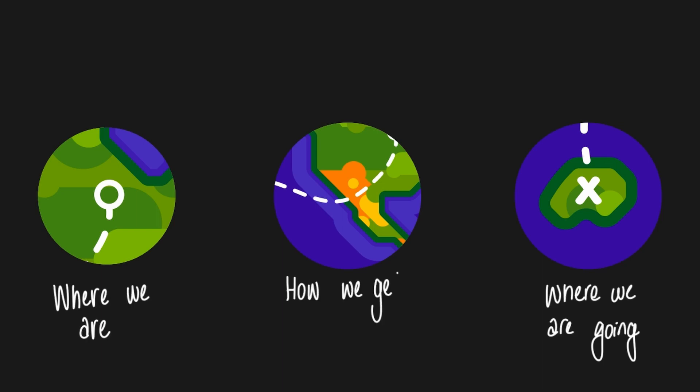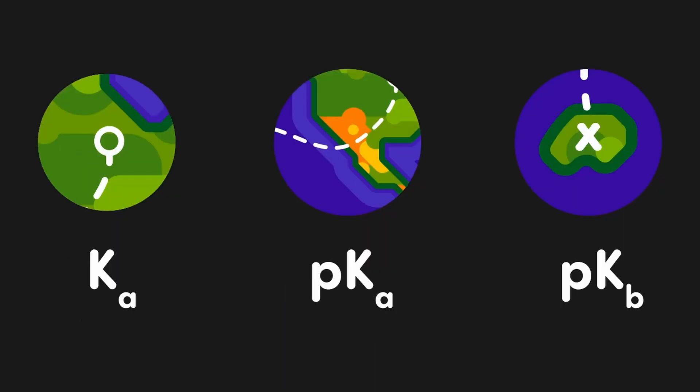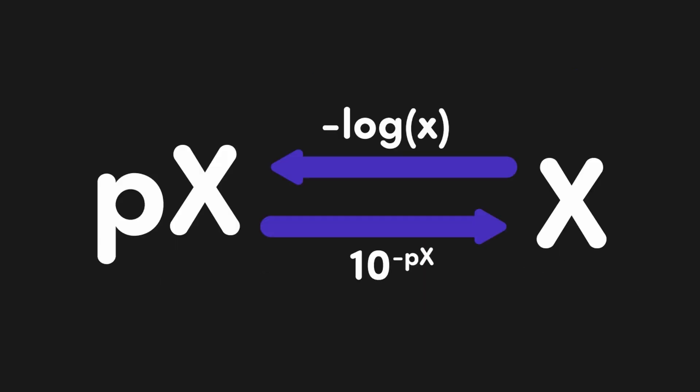For example, if we started with a Ka value and needed to get to a pKb, we could do so by converting from Ka to pKa, then to pKb. And as long as we know which calculations to perform at each step, this is pretty straightforward. With that in mind, let's start looking at those calculations and begin building our map.